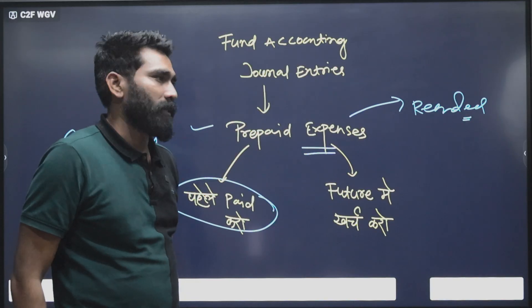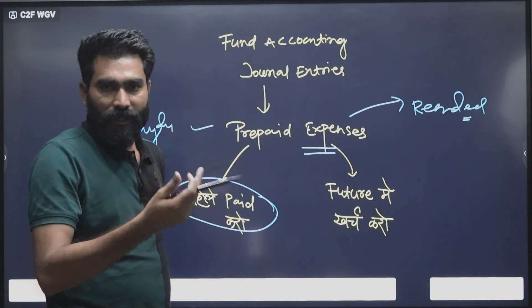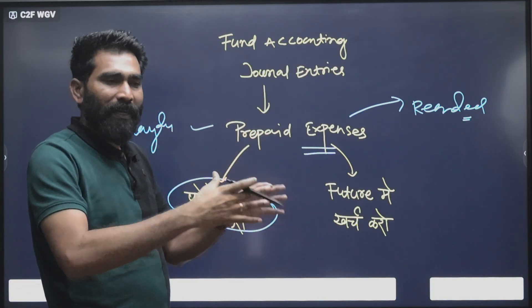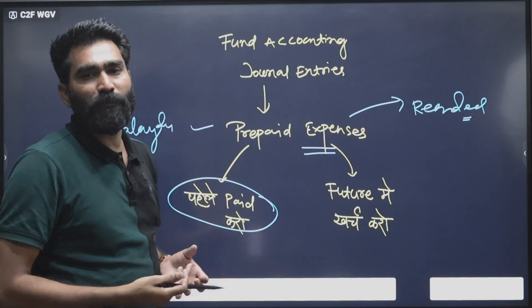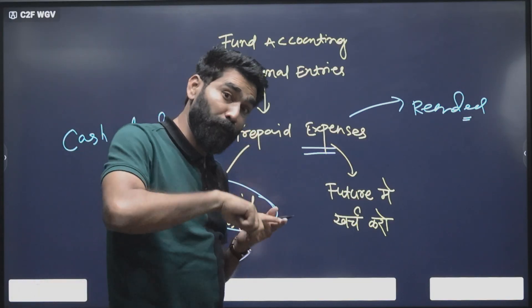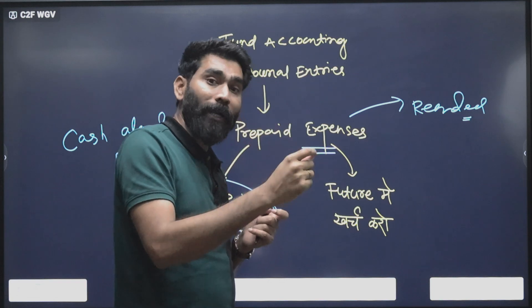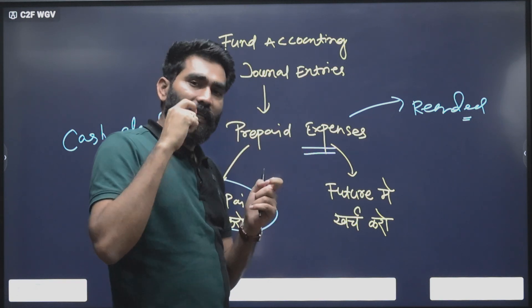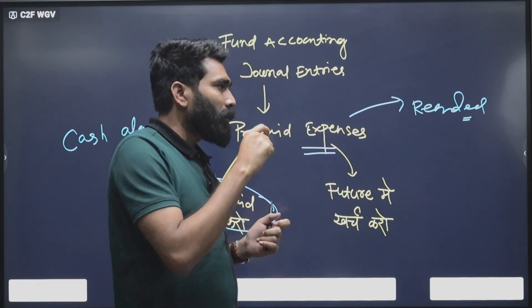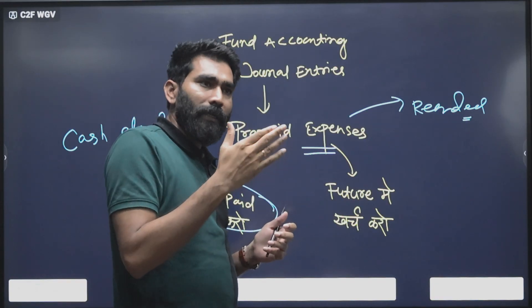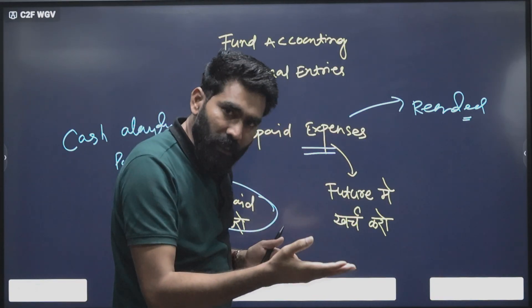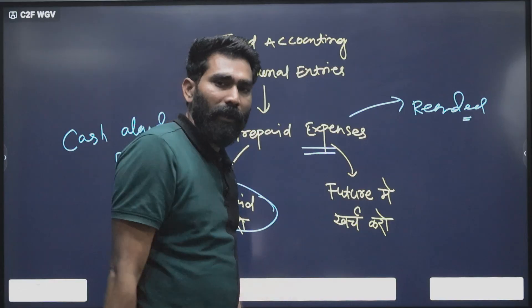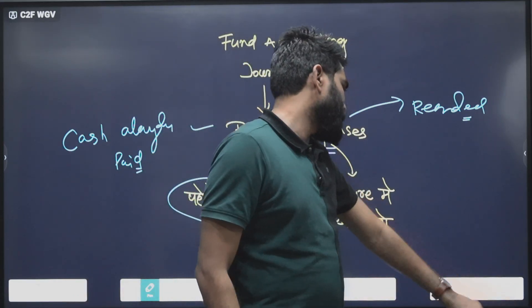It means expenses which have been paid in cash, but the expenses will be recorded to the financial statement or P&L when the expenses are actually incurred. That process we also call amortization.